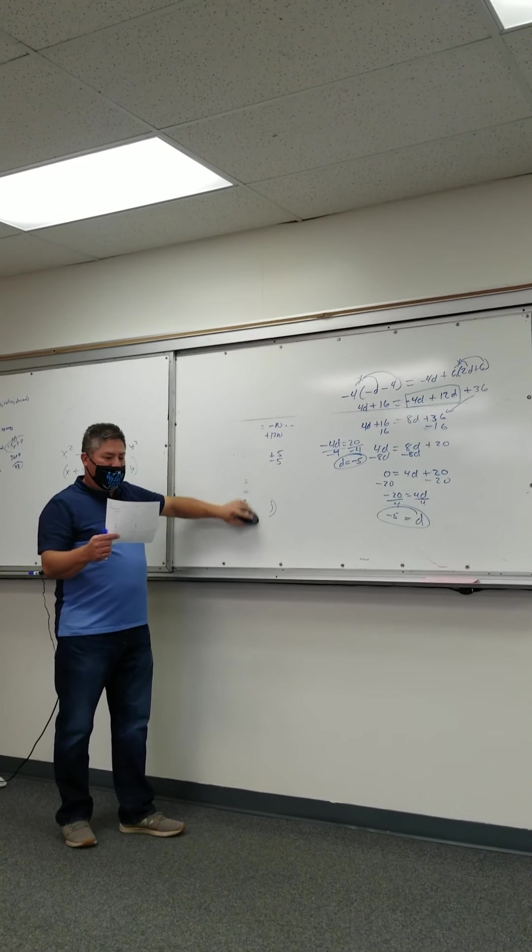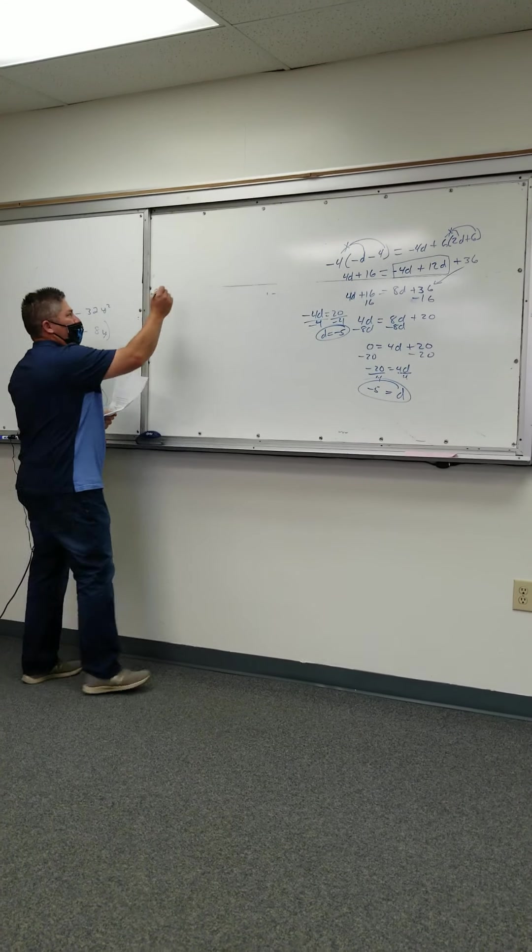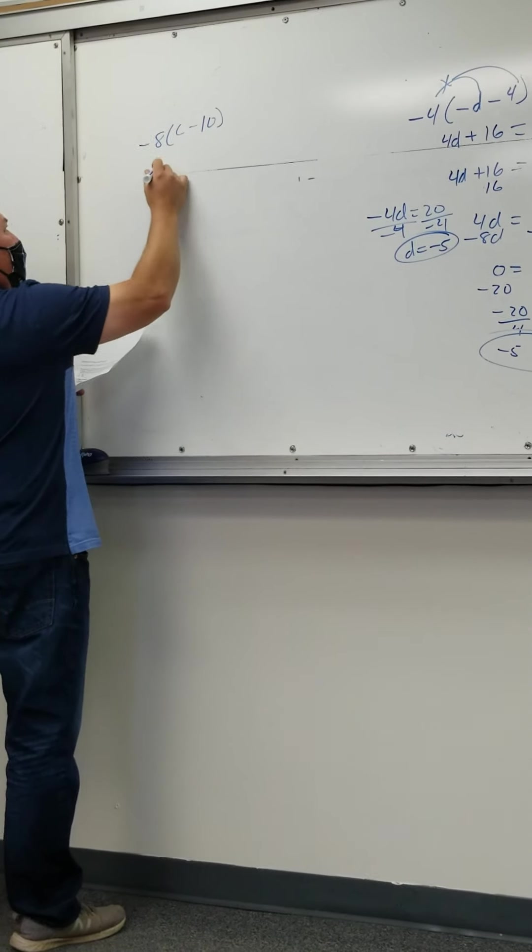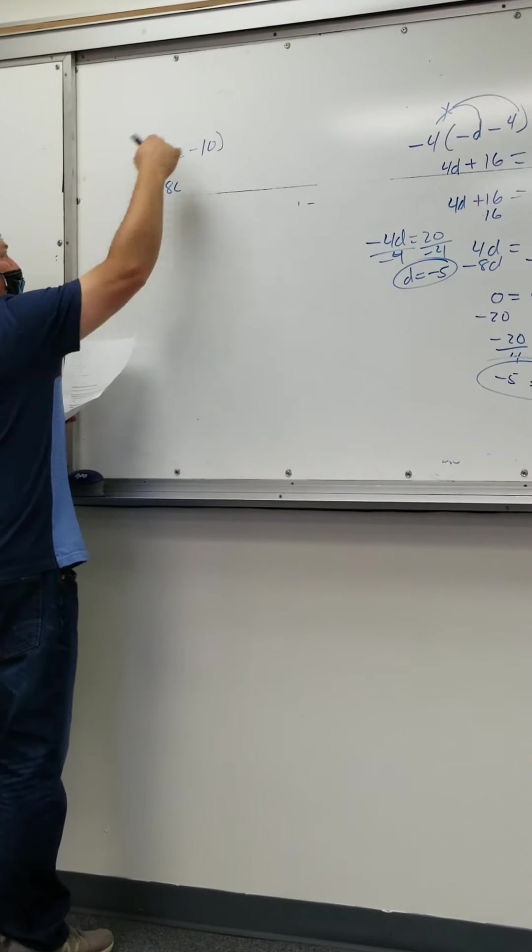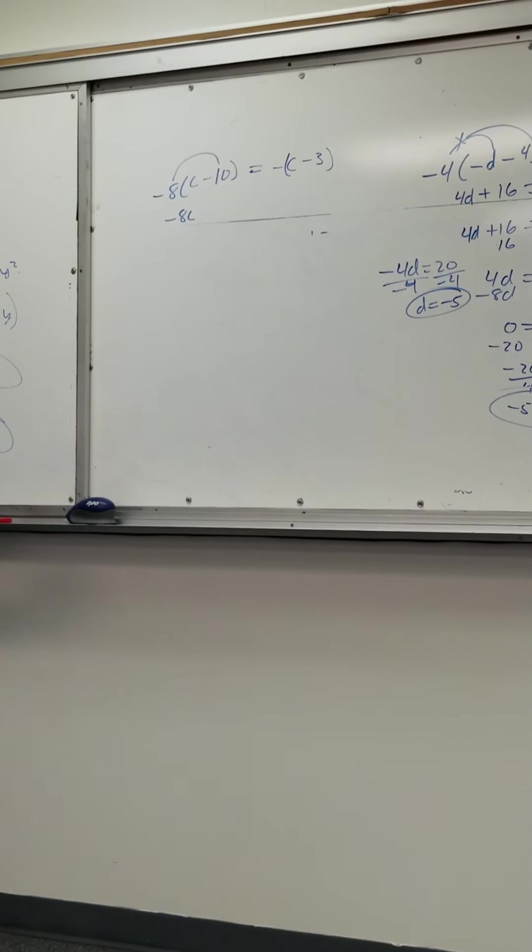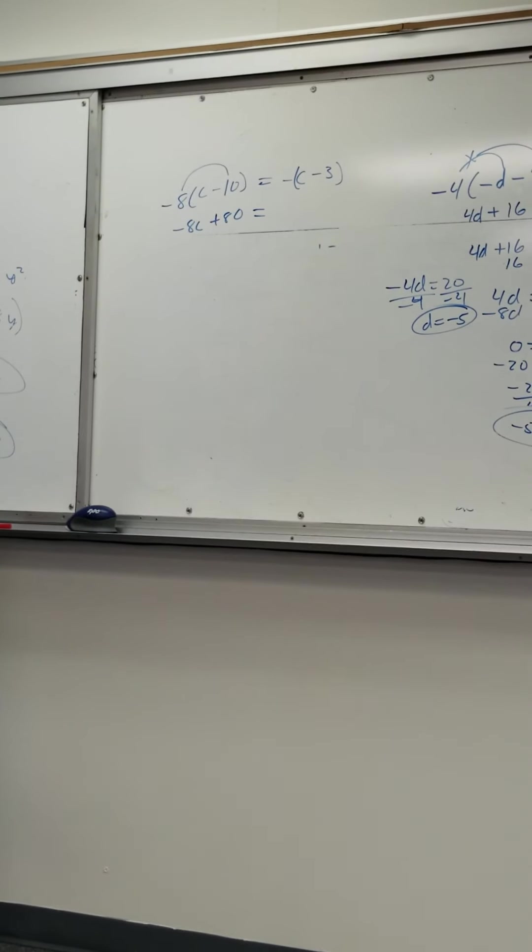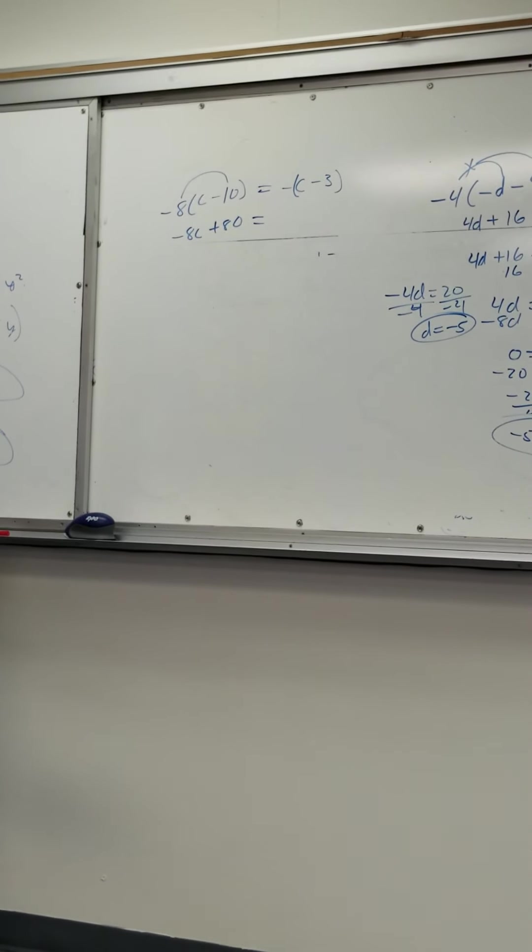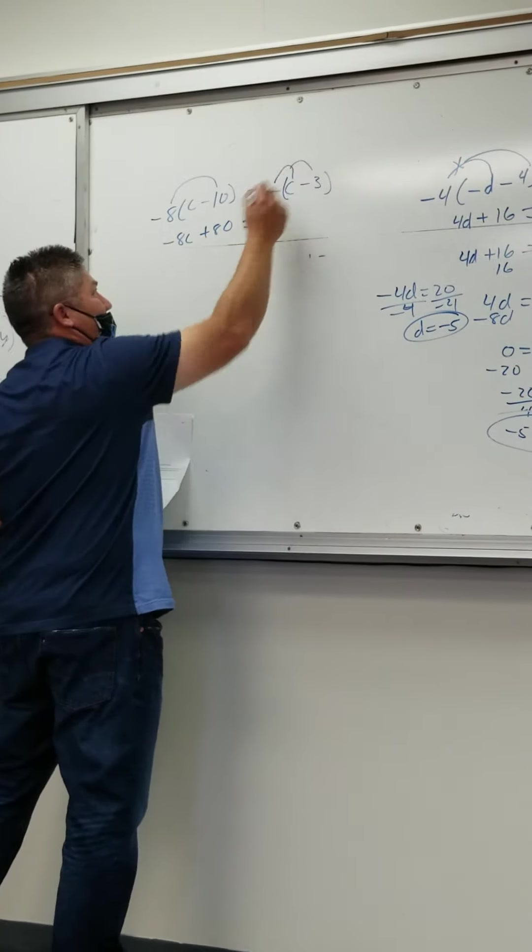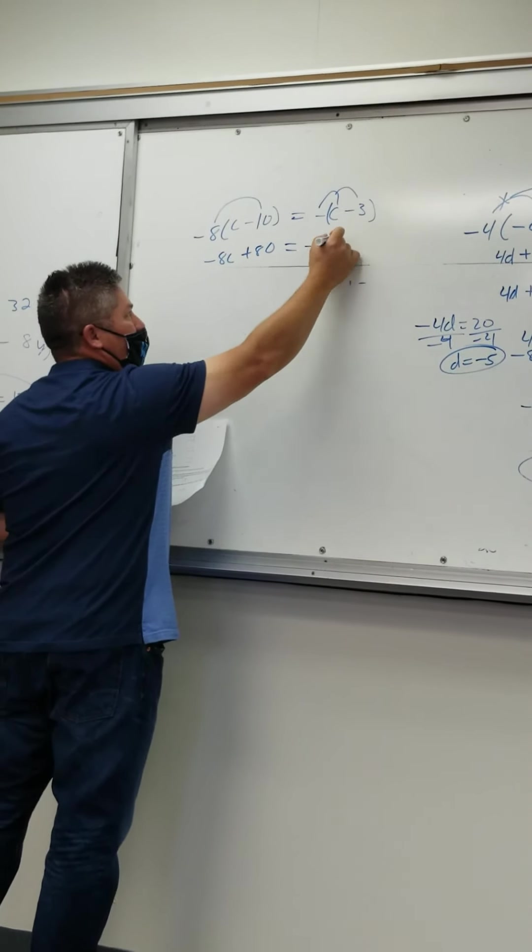You skipped number 10, Tom. Oh I skipped 10? All right, we're going to do 10 now. Ryder, distribute the negative 8 for me. Negative 8c. Very good. Distribute it again. So distribute the negative 8 to the negative 10. What does that give me? 80. Positive or negative? Positive 80. Negative times a negative is a positive. 8 times 10 is 80. Notice he multiplied, he didn't what? Add or something weird. Make sure you multiply. Now I have to multiply through the sign. I'm multiplying through the sign, just the sign. Multiplying through a negative. What's that going to give you, John? Negative c. And positive 3. Plus 3.